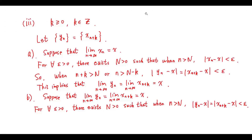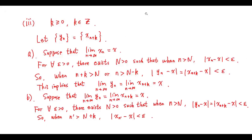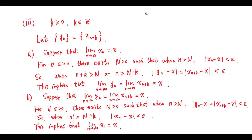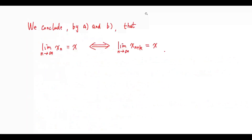For any epsilon greater than 0, there exists big N greater than 0 such that when n is greater than big N, we have this inequality. So when n' is greater than big N plus k, we have this inequality. This implies the limit of x_{n+k} equals x. We thus conclude this equivalence.